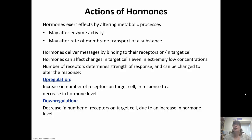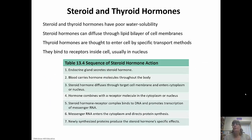Up-regulation is an increase in the number of receptors in response to a decrease in hormone level. Down-regulation is the opposite — a decrease in the number of receptors because of an increase in hormone level. Steroid and thyroid hormones both have poor water solubility, but this means they can diffuse right through the lipid bilayer of the cell membranes, which is an important factor in how they act.